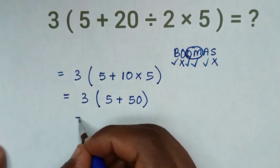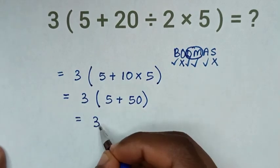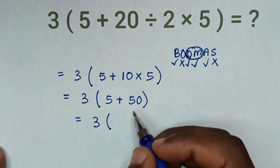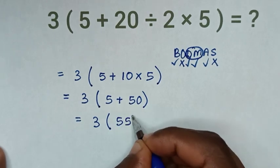Then it will be equal to 3 then bracket 5 plus 50 is 55 bracket.